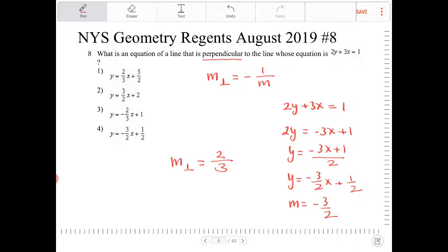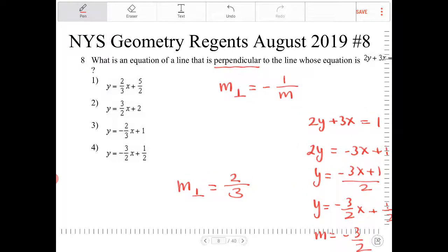So the slope of the line that's perpendicular will have a slope of 2 thirds. Which option here has a line with a slope of 2 thirds?